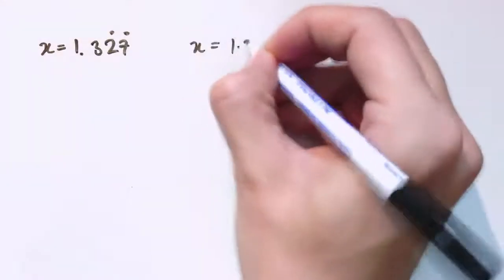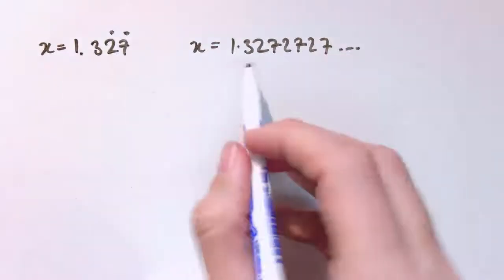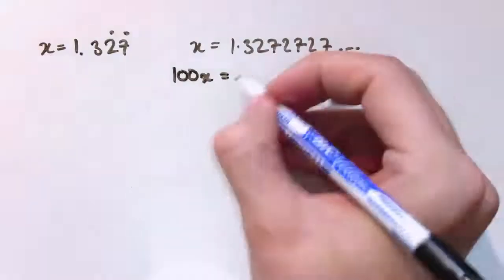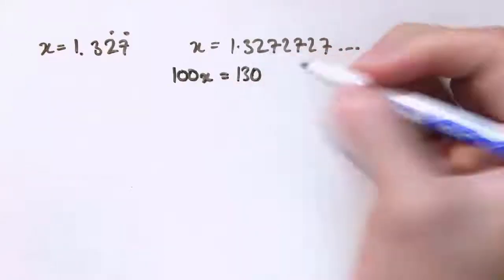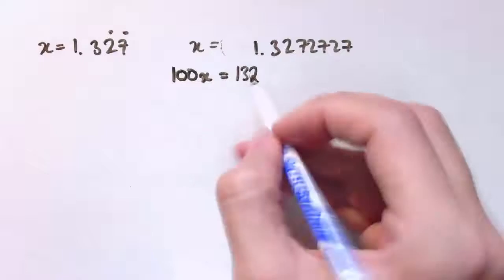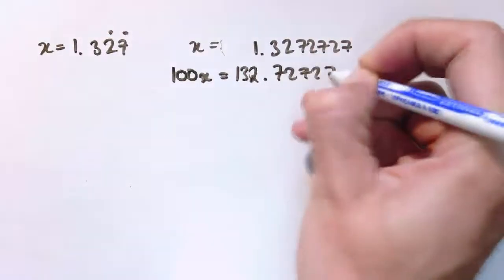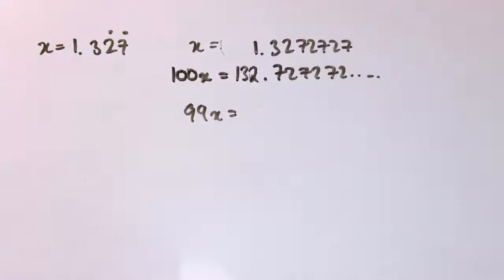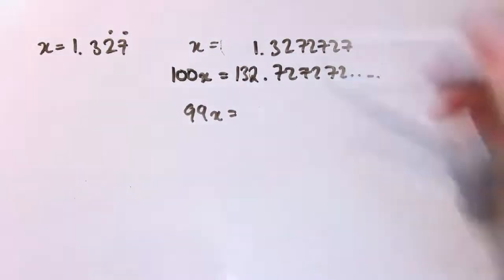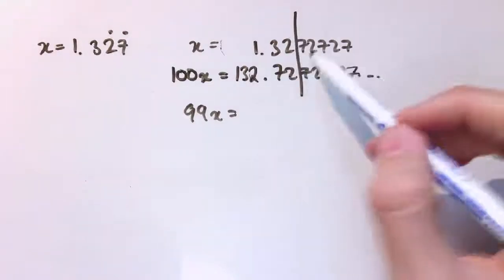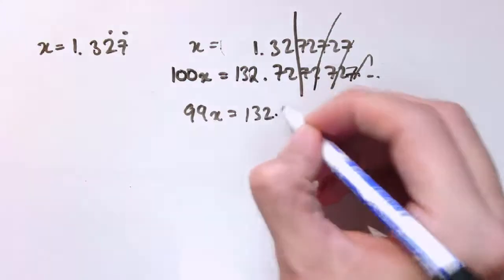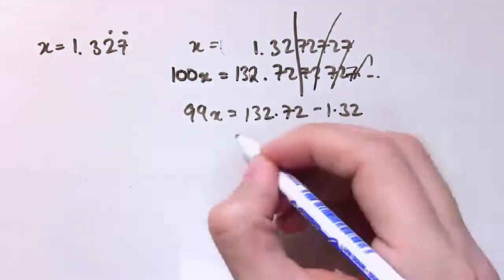It works out fine if we've got something before the recurring pattern. If we've got this as our x, so this would mean 1.327272..., times it by 100 that will give us 132.727272... etc. When I do the subtraction to get 99x equals, it's helpful if you line up the decimals and line up the digits.